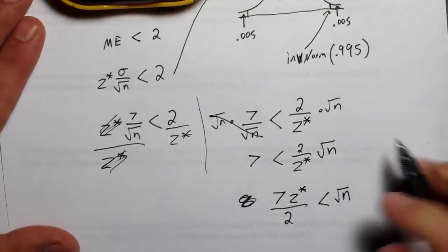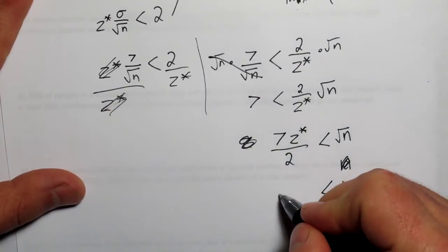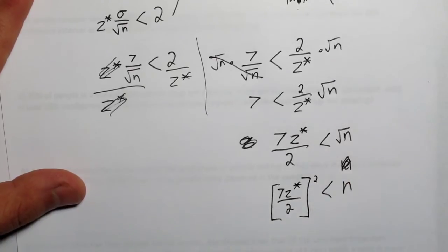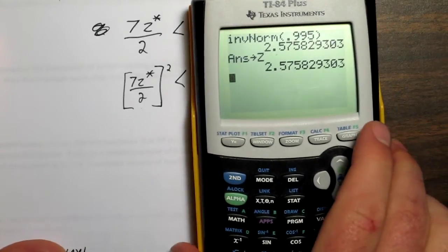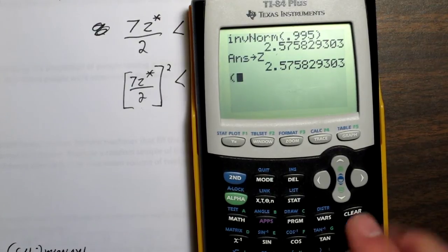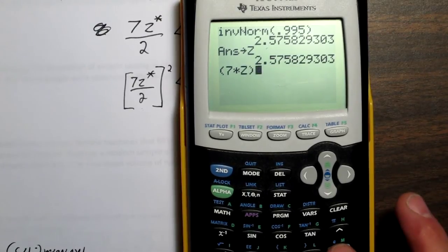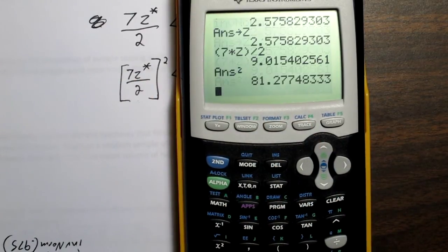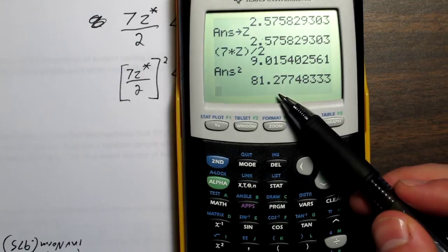Alright. Last step, we need to just square both sides to get n. So n needs to be greater than 7 z star over 2 squared. Alright, let's type this in. I'm going to use parentheses here. 7 times... And z star, I stored it as z. So 7 times z divided by 2 is this much, but then I need to square that value. So I'll square it, and we get 81.2.